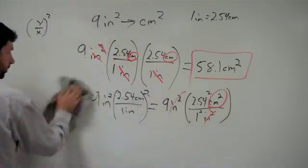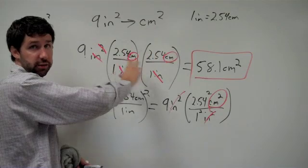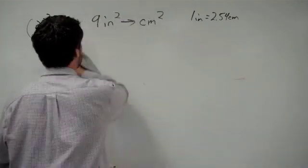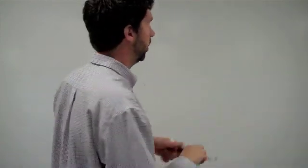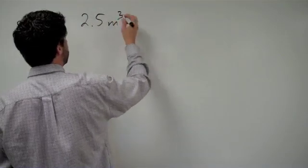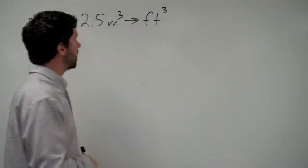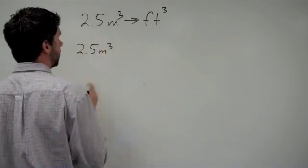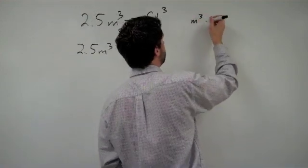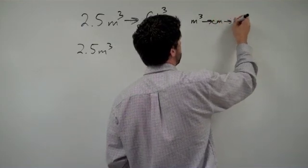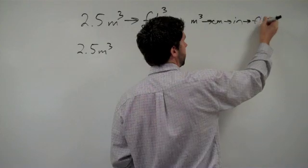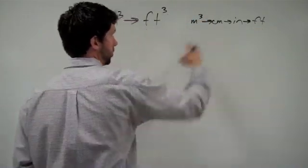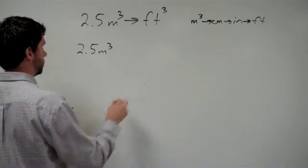We're going to do one more example, and this one's going to be for volume. This is the method I'm going to use more often. It's a little quicker, cleaner, easier. Last example in this series overall. We're going to take 2.5 meters cubed and convert that to feet cubed. So we're going to start with our 2.5 meters cubed, and we need a conversion factor. Let's think about our path here. If we're going to get from meters cubed to feet, I know that I can get to centimeters from meters, inches from centimeters, and feet from inches. There are other ways to do this conversion. You could convert directly from meters to feet if you know the conversion factor.